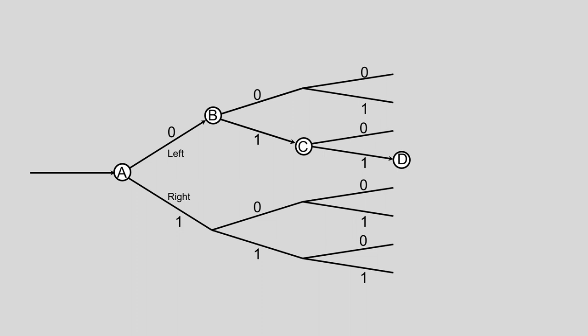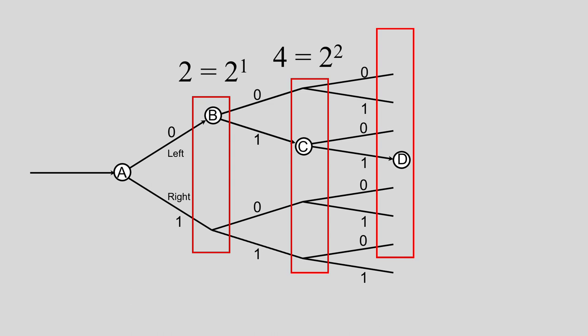Let's see if we can make this into a general equation. For one fork, the number of possible destinations is two, or two raised to the power one. For two forks, the number of possible destinations is four, which is two times two, or two raised to the power two. For three forks, the number of possible destinations is eight, which is two times two times two, or two raised to the power three. So the number of possible destinations is 2 raised to the power of the number of forks.